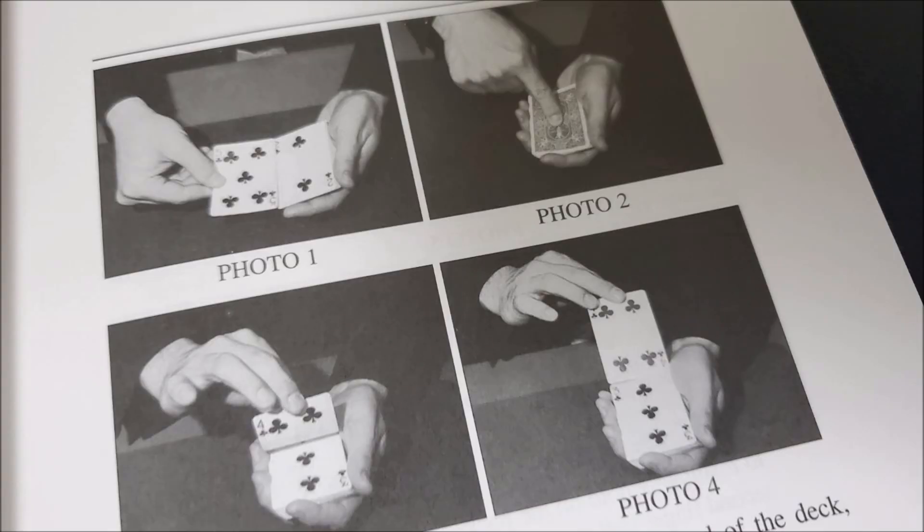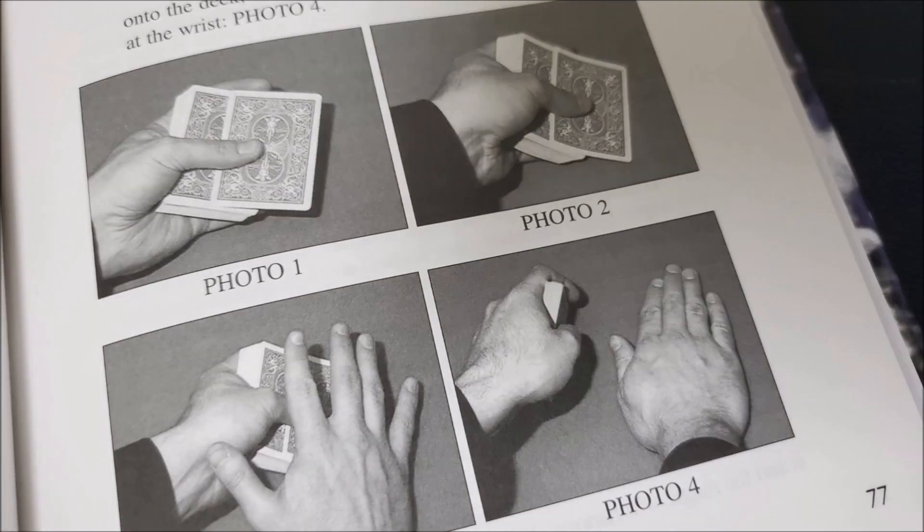Now if you're an intermediate to advanced magician, you'll be familiar with all those terms. If you're a beginner, you'll sit there and go, right? Because you're like, I wish I had a video, or I wish I had pictures. This book does have photographs, it does, but he is not going to photograph every single element, and he's going to rely on you already having a little bit of knowledge.